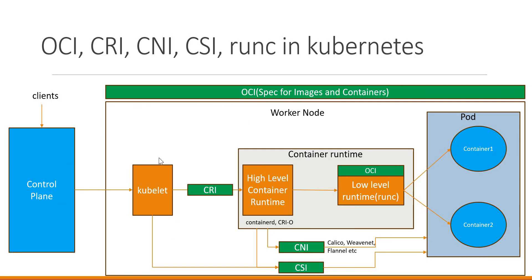In the worker node, in addition to the kubelet component, we also have another important component called container runtime. Kubelet interacts with the container runtime via an interface called CRI — Container Runtime Interface. This interface provides the specifications and the required methods which need to be implemented by the corresponding container runtime. We have different container runtimes like containerD, CRIO and so on. These container runtimes implement the specifications provided by CRI, so kubelet calls the container runtime via CRI to create and manage the lifecycle of containers inside a pod.